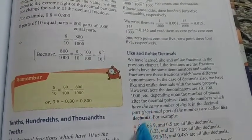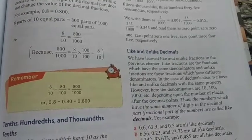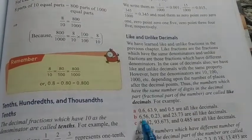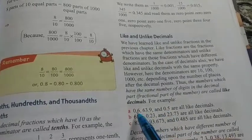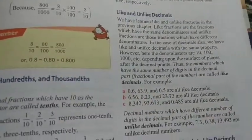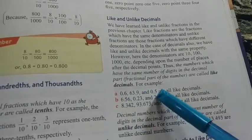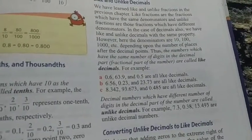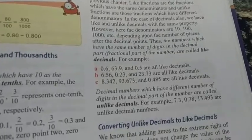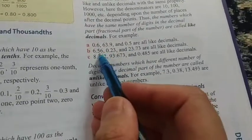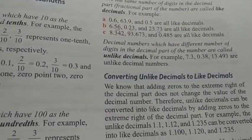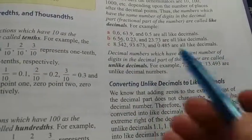Like decimals - decimals ke baad wale agar hume do numbers deyen. Decimal ke baad wala jo part ha usko bolte hai fractional part. Yaha pae 6 is a fractional part, yaha pae 9, yaha pae 5. If the fractional digits, the fractional part of the number, if they are having the same number of digits, tab haam bol sakte hai ki that is a like decimal. Yaha pae dekhenge yeh bhi like hai kiunki yaha pae bhi 2 digits hai, yaha pae bhi 2 hai, yaha pae bhi 2 hai. We have to see the number of digits, yeh ni ki number bhi same hoona chahi, number of digits same ho. Agar 2 hai toh 2 hi ho.